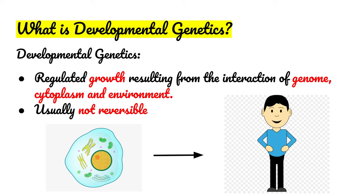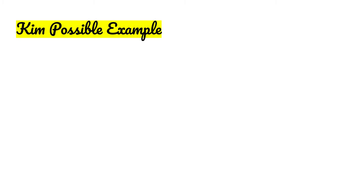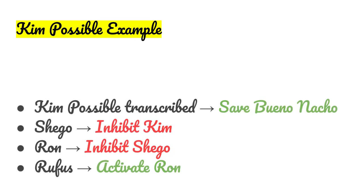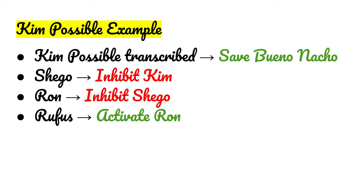Today, we are going to look at an example of a developmental network from the TV show Kim Possible. Kim is trying to save her favorite restaurant, Bueno Nacho, but in order for her to do so, she needs some help. Rufus, Ron Stoppable, and Chigo are all going to act as proteins in this example, and Kim saving Bueno Nacho will be the transcribed protein.